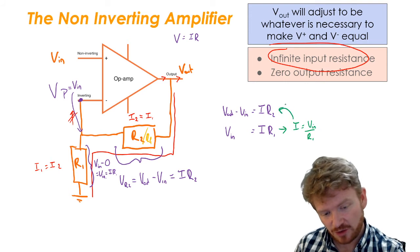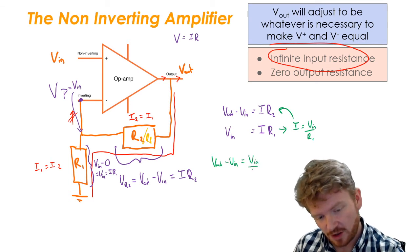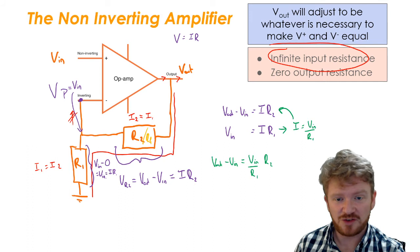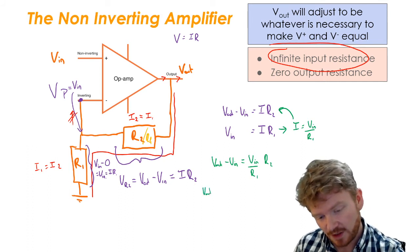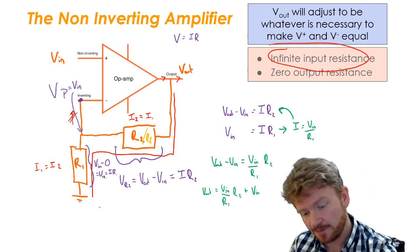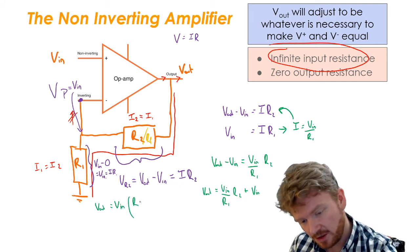And then I'm going to substitute it into this equation. So I can say Vout minus Vin is equal to Vin over R1 multiplied by R2. Now, at this point, I'm going to use the same trick that I did earlier, and I'm going to see that there's a common factor here. So I can say Vout is equal to Vin over R1 multiplied by R2 plus Vin. And now I've got this common factor of Vin. So I can say Vout is equal to Vin multiplied by R2 over R1 plus 1.